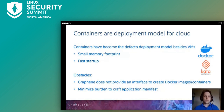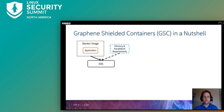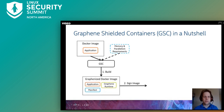To encourage the usage of our container integration, we have to simplify the manifest drastically. For this purpose, we created Graphene Shielded Containers, or GSC. It takes as input a regular Docker image with an application and its dependencies, and optionally a minimal application manifest detailing memory and parallelism requirements. These two are given to GSC to build a graphenized Docker image, which includes the application, the Graphene runtime, and a generated manifest file based on the user's inputs and Docker image configurations.